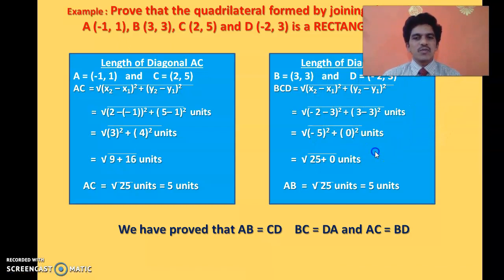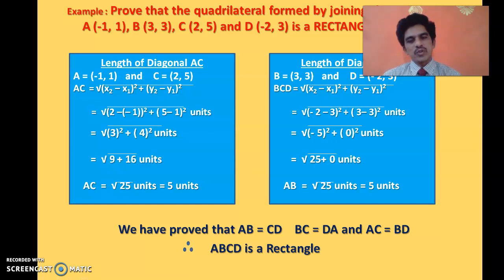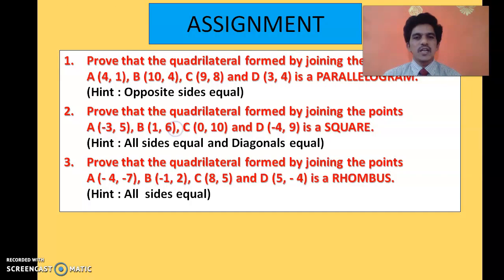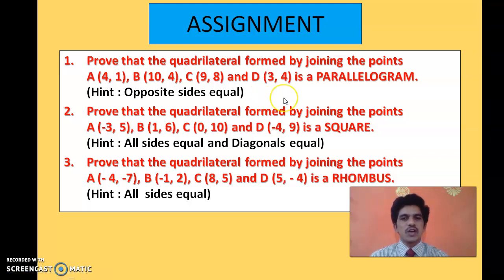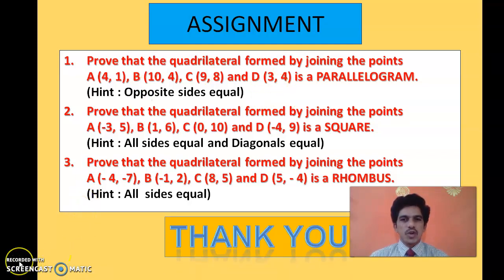We have now proved that AB = CD = √20, BC = DA = √5 (opposite sides equal), and AC = BD = 5 (diagonals equal). Therefore, ABCD is a rectangle. If it were a square, all four sides would be equal and diagonals also equal. I hope you understood this well. As an assignment, solve three problems: prove that the given quadrilaterals are a parallelogram, a square, and a rhombus. Hints are provided. Post your answers, and your understanding of the distance formula and quadrilateral types will be strengthened. Thank you.